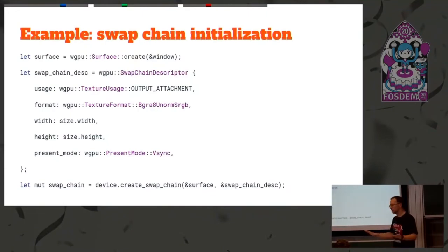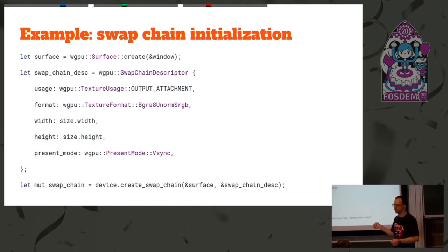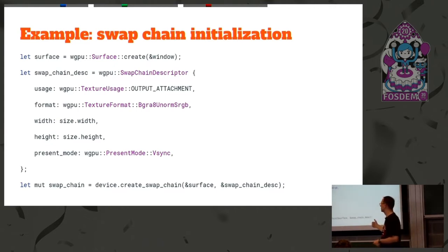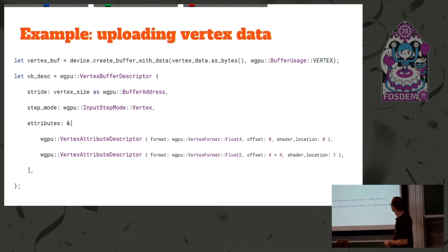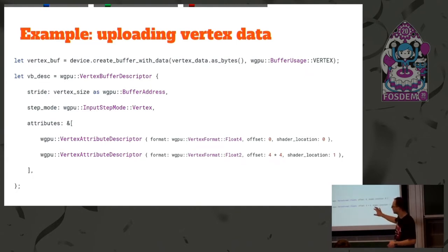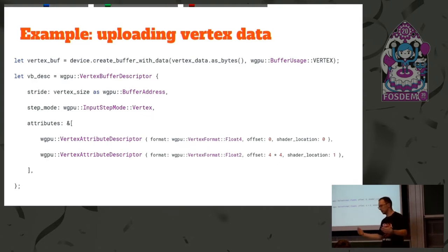Swap chain initialization is completely separate from the device. For anyone who only knows OpenGL, this can be weird — because you don't have to have a swap chain. You can do compute-only workloads without even caring about presenting anything. So this is optional. If you need to present something, you create your swap chain based on the surface from the window. For buffer creation we specify what this buffer is going to be used for — in which case 'vertex' means it's going to be used as a vertex buffer. The descriptor of the vertex data is separated from the actual data.